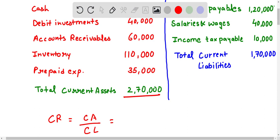total for current assets is given to us, that is 2,70,000 and total for current liabilities is given to us is 1,70,000.